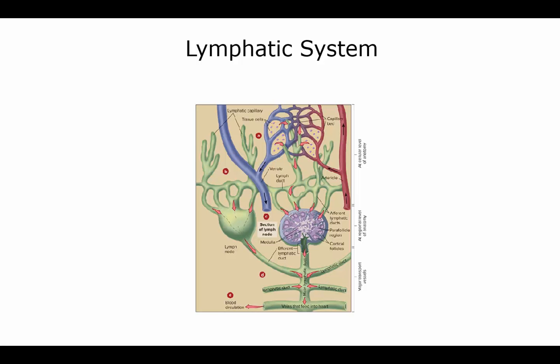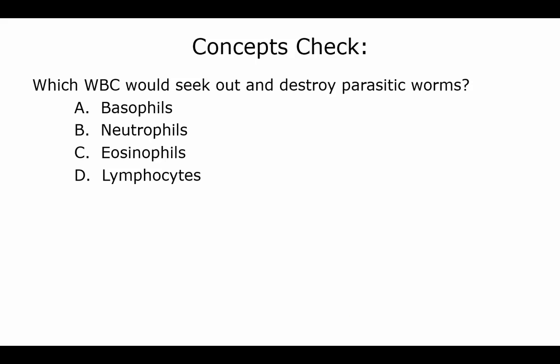This diagram is on page 449 of your textbook. It shows how capillaries take excess fluid from blood vessels into lymphatic ducts, which lead to lymph nodes. Fluid enters via the afferent vessel, filters through the node, and exits via the efferent vessel, then moves through lymphatic ducts back to the subclavian veins that feed the heart. Review question: which white blood cell seeks out and destroys parasitic worms? You would know because you'd see a raised count of this leukocyte — the answer is eosinophils.